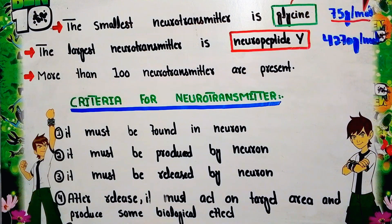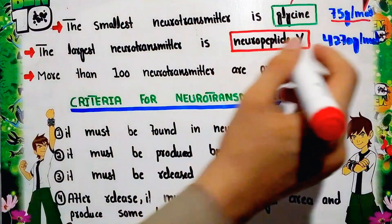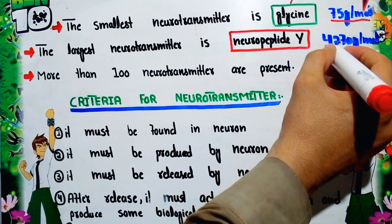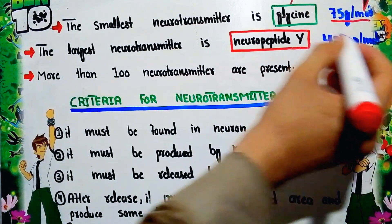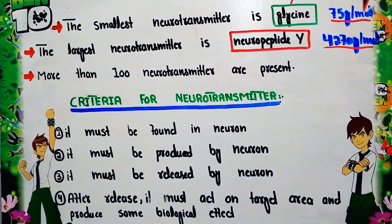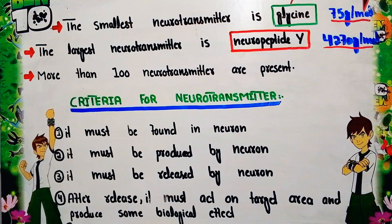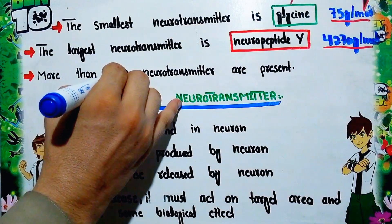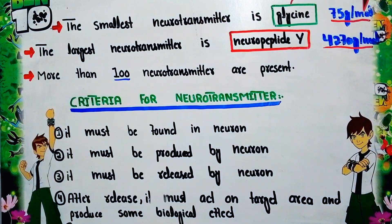The largest neurotransmitter is Neuropeptide Y, with a molecular weight of 4270 grams per mole. There are more than 100 neurotransmitters present in our nervous system, and this number is continually being added to over time.